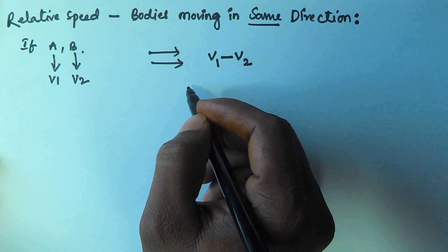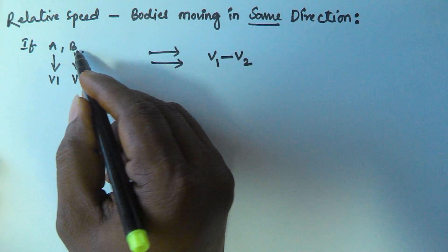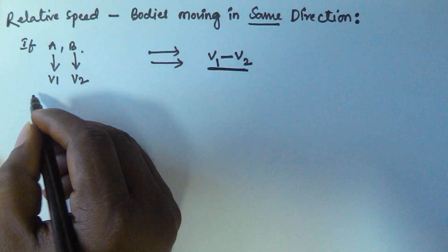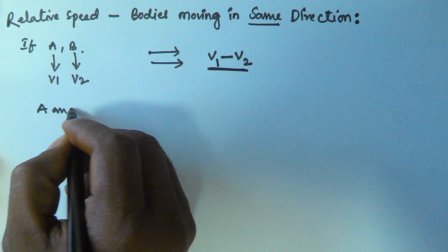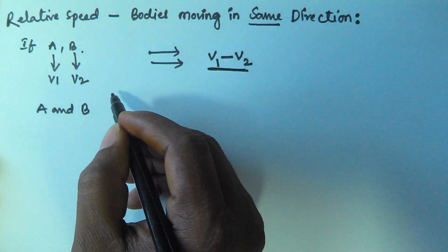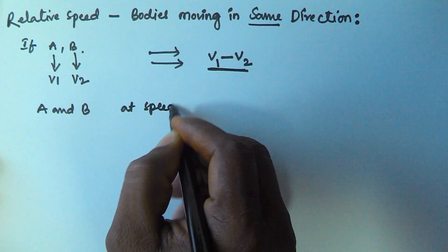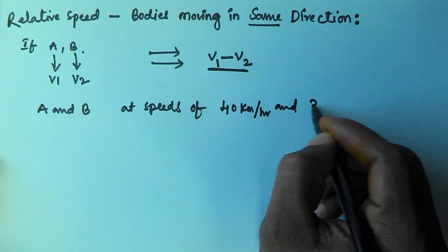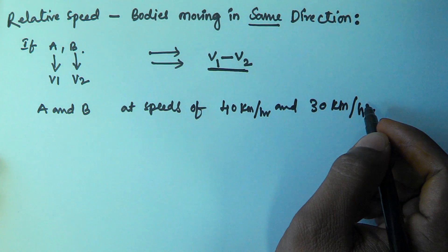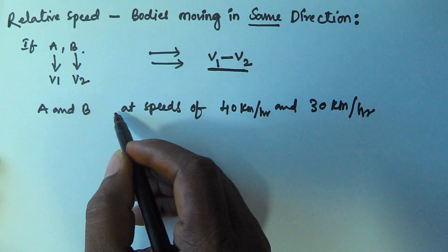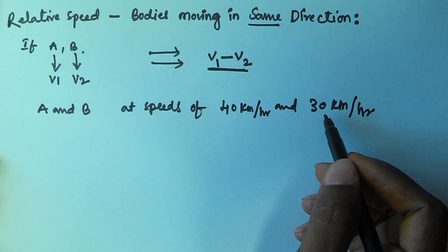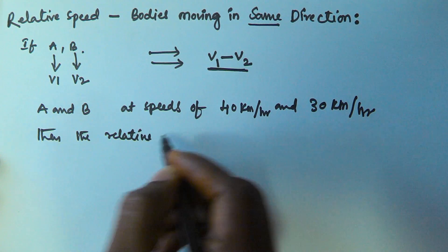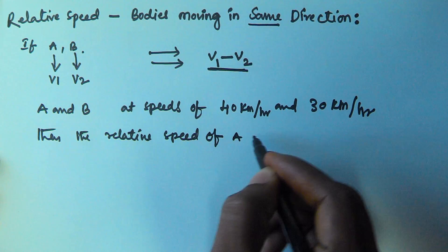So if two bodies are moving in the same direction, the relative speed of one with respect to the other is the difference of their speeds. For example, if two cars A and B are moving in the same direction at speeds of 40 kilometers per hour and 30 kilometers per hour, then the relative speed of A with respect to B is...